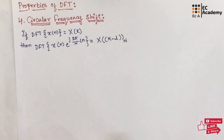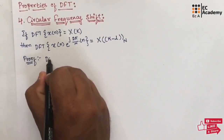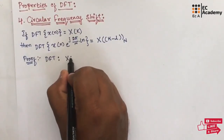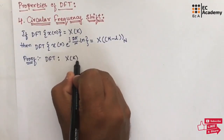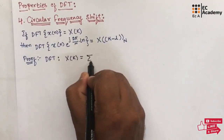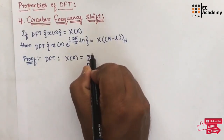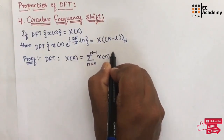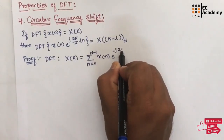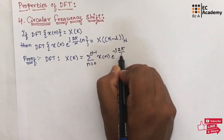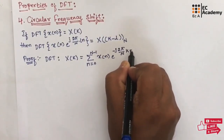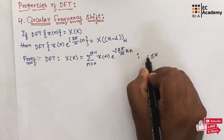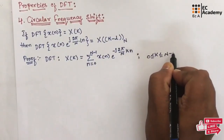Let us prove. We know the DFT of the sequence can be given as x of k, that is equal to summation of n equals 0 to N minus 1 of x of n into e to the power of minus j 2 pi by N into kn, for k values ranging between 0 to N minus 1.